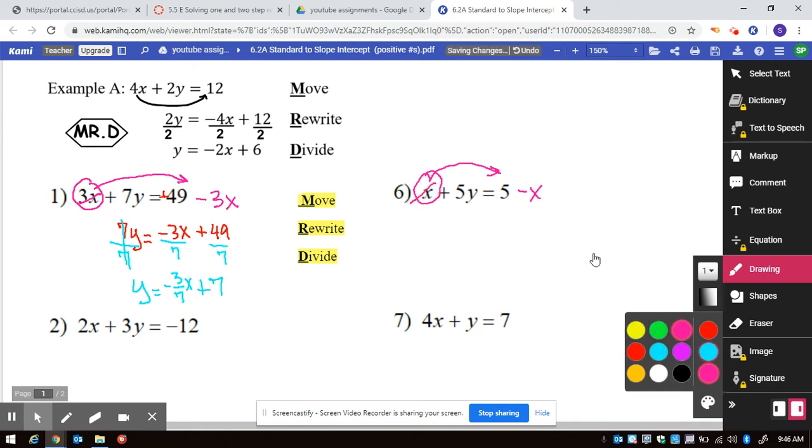And now we are going to rewrite. So 5y is equal to negative 1x plus 5, because this is positive. And then the last thing is divide by 5.